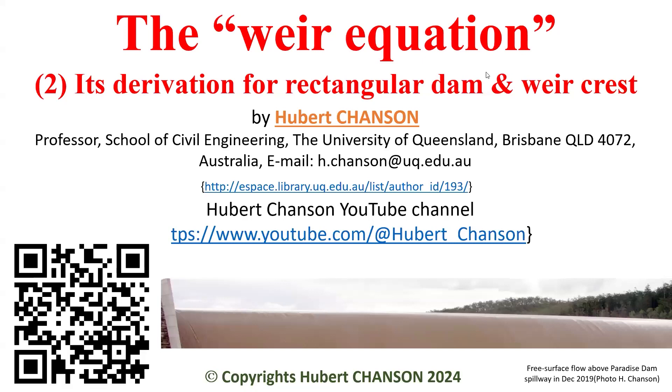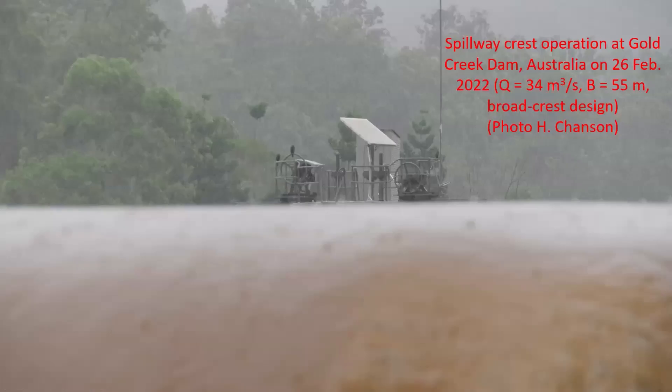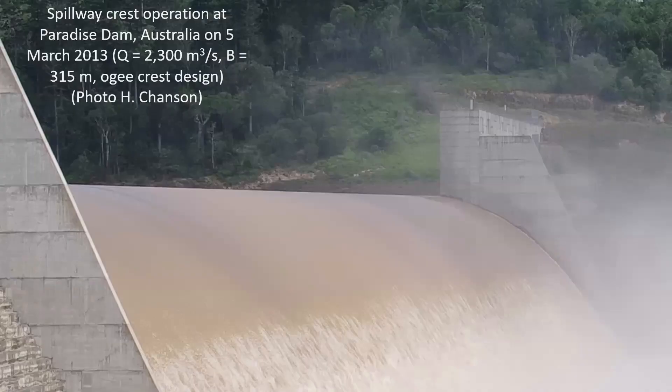The weir equation is a derivation for a rectangular dam or weir crest. The weir equation is used to calculate the discharge capacity over a rectangular spillway crest, like here at Gold Creek Dam, or here, the Ogee crest of the Paradise Dam in Australia.